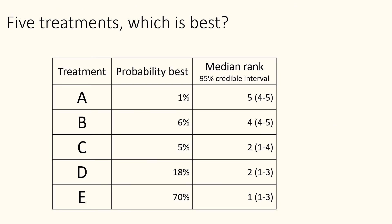We can also estimate which is predicted to be the most effective treatment and rank the treatments. Here, treatment E has a high probability of being best and treatment B is unlikely to be best. On average, treatment E is ranked in place one and is very likely to be in the top three treatments. Treatment B is on average placed fourth and very likely to be in the bottom two treatments. Displaying this for each outcome allows you to assess outcomes in context — for example, there might be a treatment that is very effective but has a high rate of side effects.